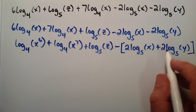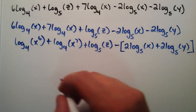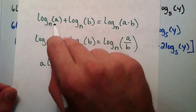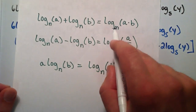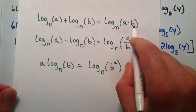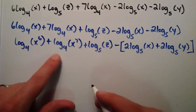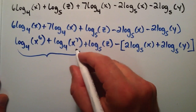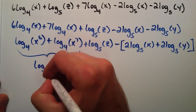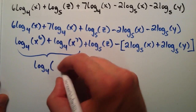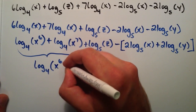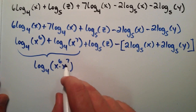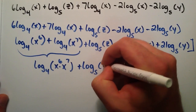Now let's work down to the next line. We're going to look at the first property: log base n of a plus log base n of b equals log base n of a times b. So we're simply going to combine these two base-4 terms into one: log base 4 of x to the 6th times x to the 7th. And then we just carry down the next term, plus log base 5 of z — we're not going to do anything with that yet.